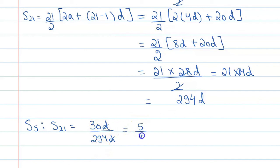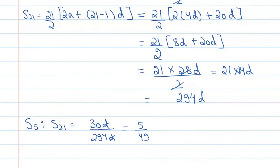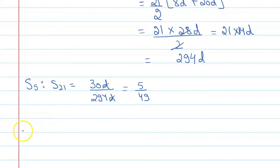And the final answer is hence a5 ratio a21 is equal to 1 is to 3, and s5 ratio s21 is equal to 5 is to 49. Thank you.